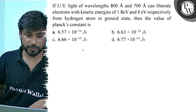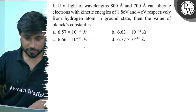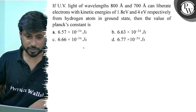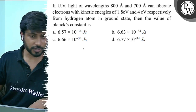Option A: 6.57 into 10 to the power minus 34 joule seconds. Option B: 6.63 into 10 to the power minus 34 joule seconds. Option C: 6.66 into 10 to the power minus 34 joule seconds. Option D: 6.77 into 10 to the power minus 34 joule seconds.